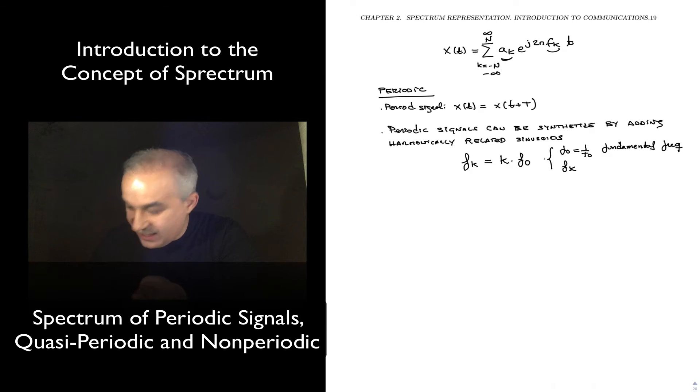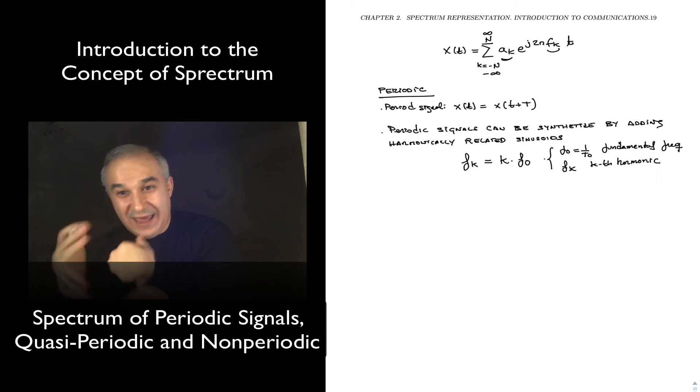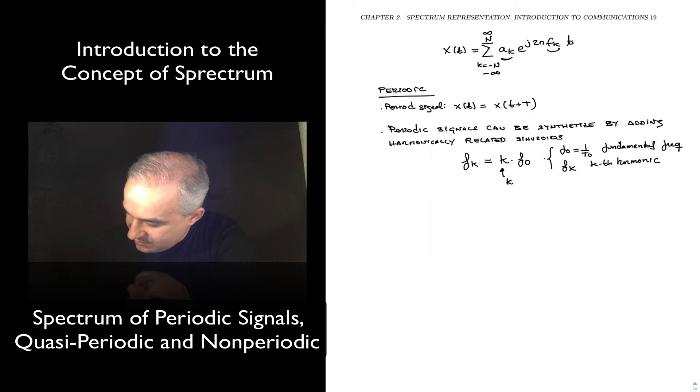And all f_k are going to be the kth harmonic, right? And what we have is that k is an integer. So here k belongs to the set of integer numbers.